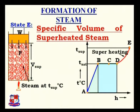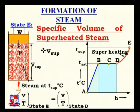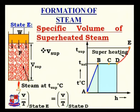The specific volume of superheated steam is denoted V_sup. We can derive an equation using the constant-pressure process between point D and point E: V/T at point E equals V/T at point D.